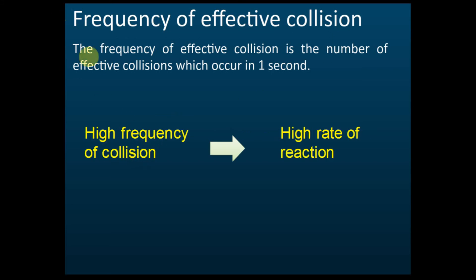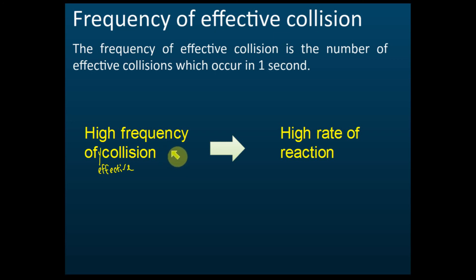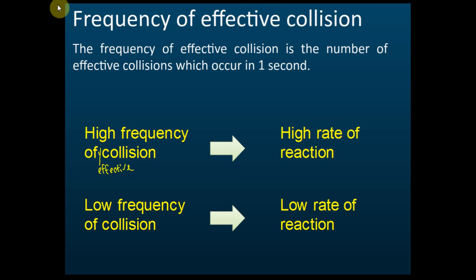High frequency of effective collisions means more product is produced in one second, therefore the rate of reaction is high. If the frequency of effective collision is low, then the rate of reaction will also be low. That is the relationship between frequency of effective collisions and the rate of reaction.